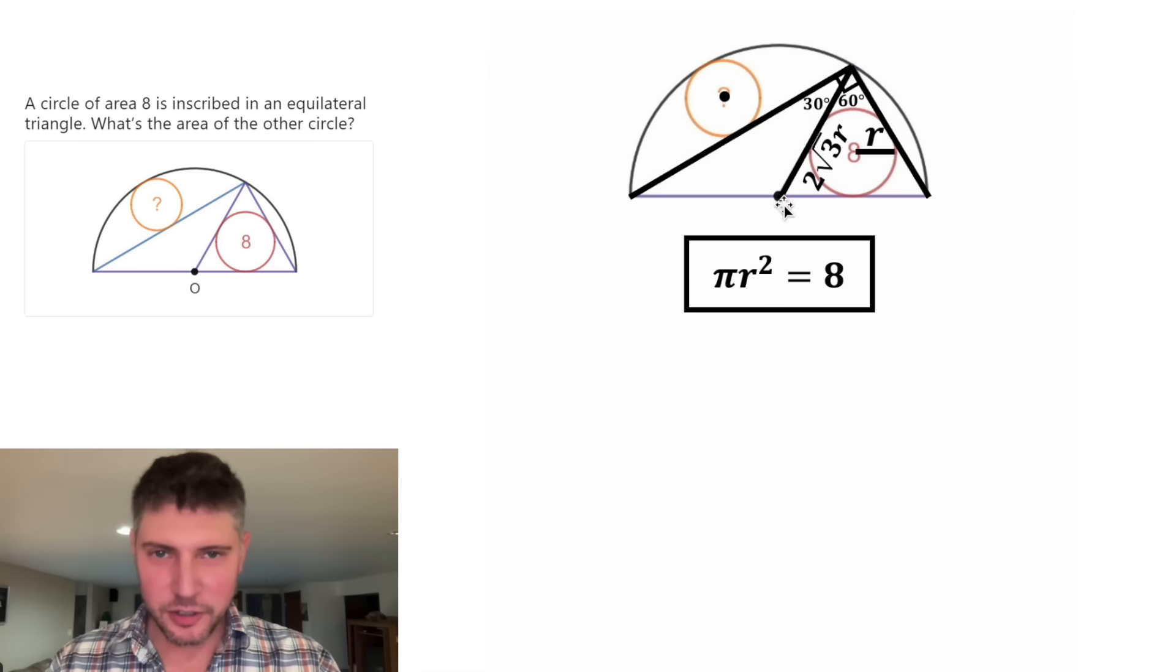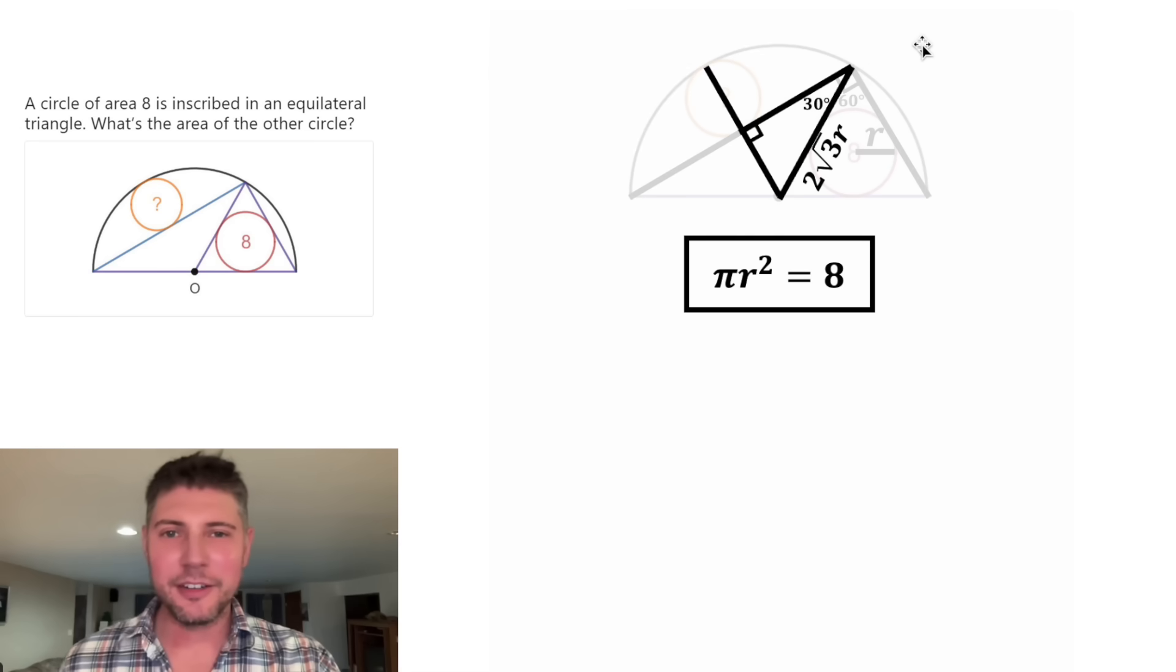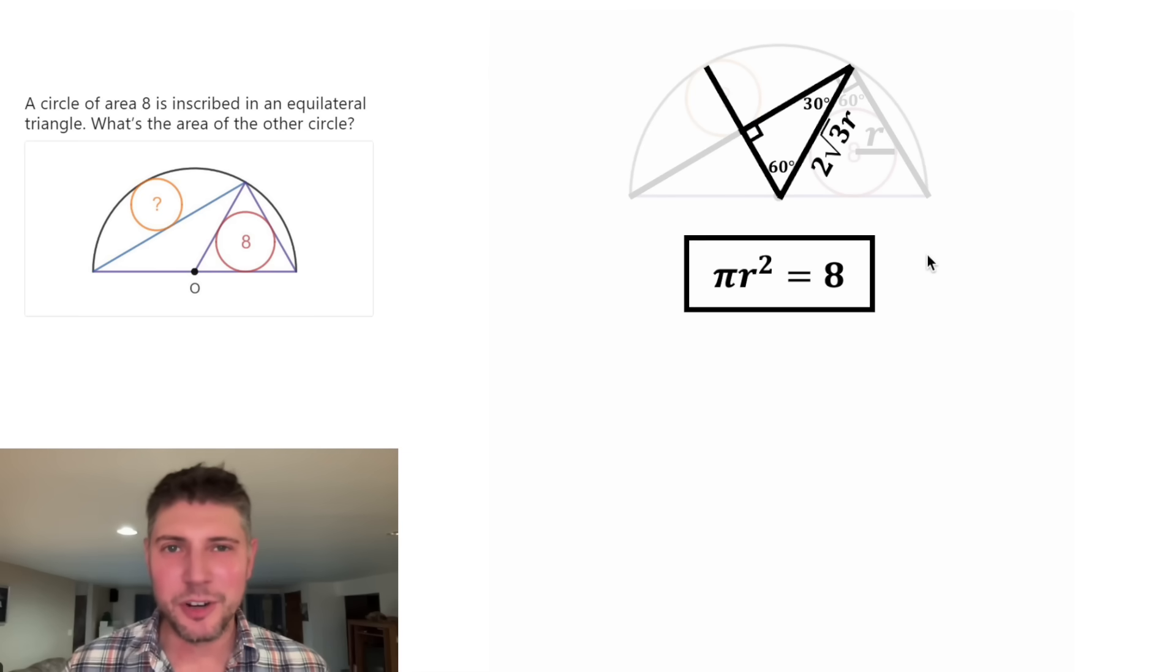From here, let's find the center of this circle and connect this center through here. Since part of this is a radius and this is a tangent line, these two will meet at 90 degrees. And this angle down here would also be a right angle. Next, let's focus on this triangle. Since this angle is 30 and this one's 90, that leaves 60 for this one. Once again, because all the angles add up to 180 degrees.